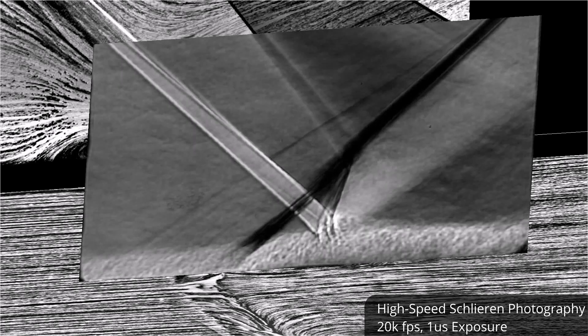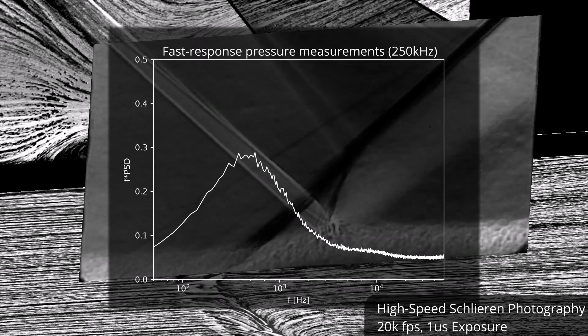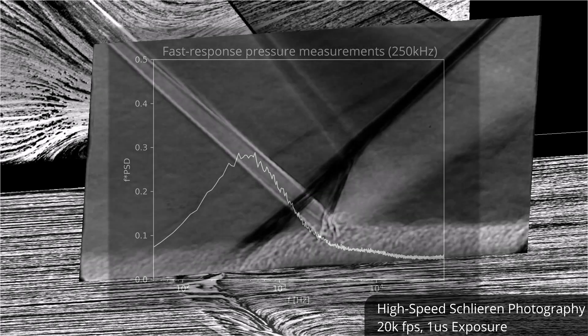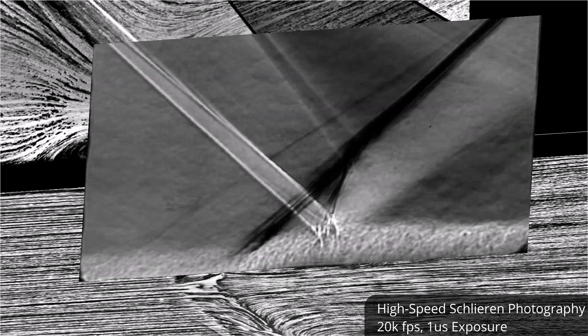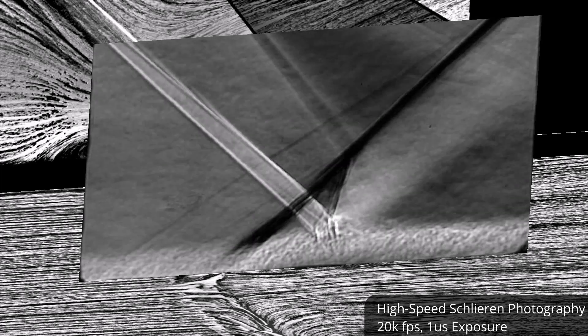At the interaction onset, the dominating source of unsteadiness is the separation shock that has a very low frequency signature of around 2 decades lower than the incoming flow. This strong oscillation causes the most trouble when designing high-speed vehicles since it can induce vibrations and lead to increased stress due to temperature and pressure fluctuations.